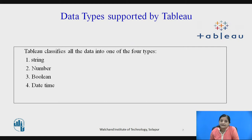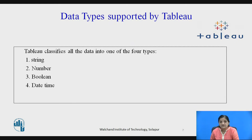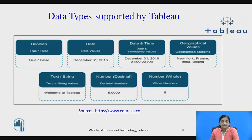Now let's see some of the data types supported in Tableau. Tableau classifies all the data into one of four types: string, number, boolean, and date type. Boolean data type has only two values, that is true and false.